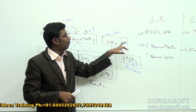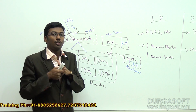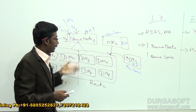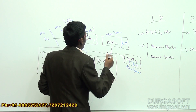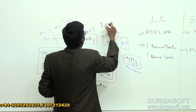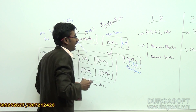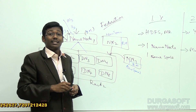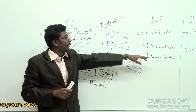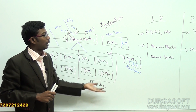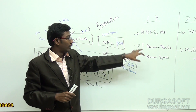Maintaining multiple name nodes and multiple namespaces and achieving higher throughput - this complete concept is called HDFS Federation. HDFS Federation is a concept especially in Hadoop 2.x involving multiple name nodes and multiple namespaces. We only have this in 2.x architecture, not in 1.x.